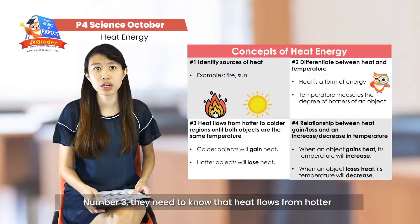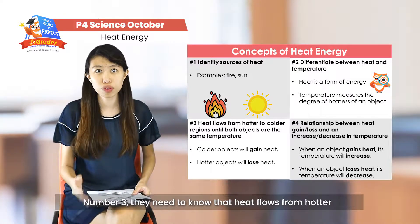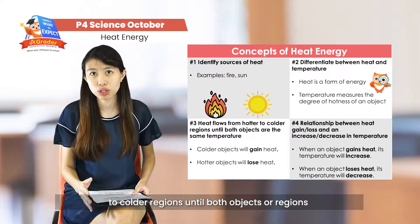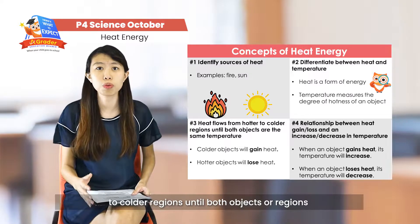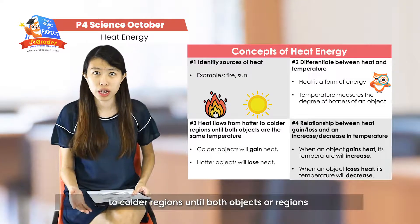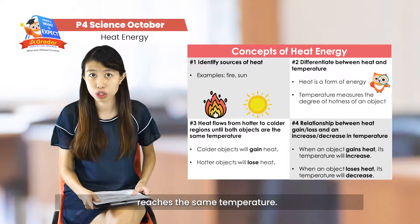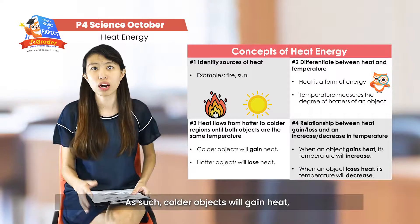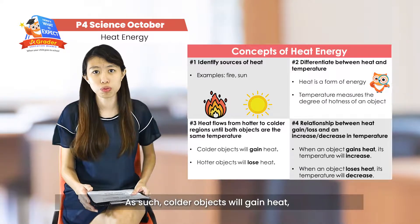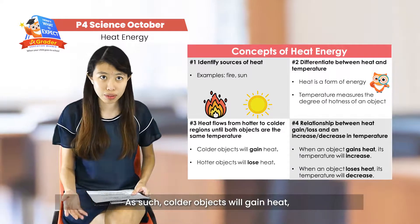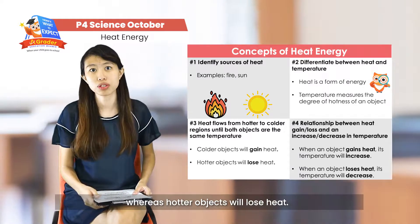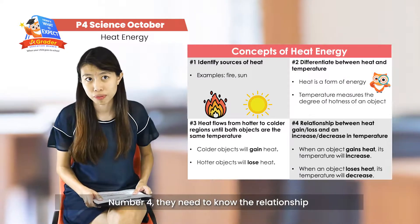Number three, heat flows from a hotter to a colder region until both objects or regions reach the same temperature. As such, colder objects will gain heat, while hotter objects will lose heat.